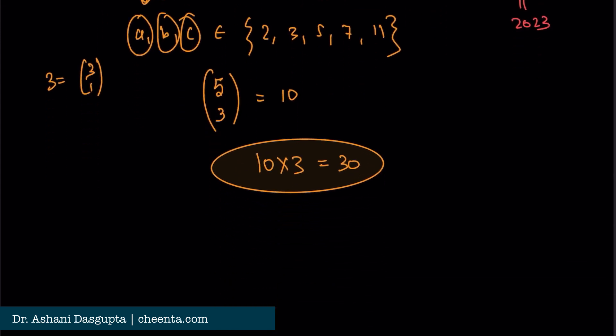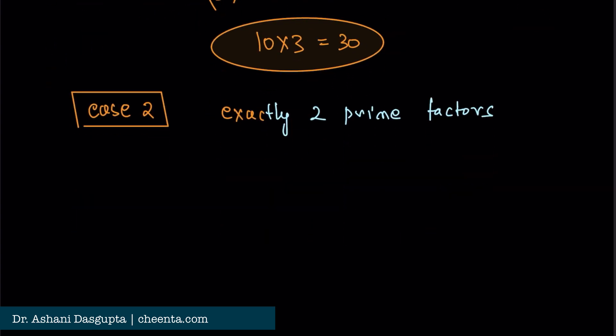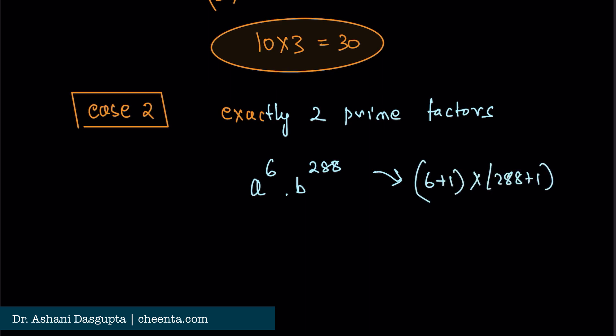Let's look at Case 2. There are exactly two prime factors. That's possible if we have these two cases. We have a^6 × b^288. That's one case, because the number of divisors will be (6+1) × (288+1). This is basically 17² and this is 7, which is 2023. So this is one case, subcase 1.